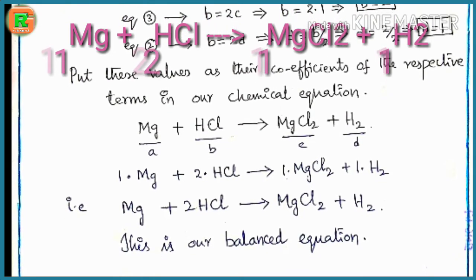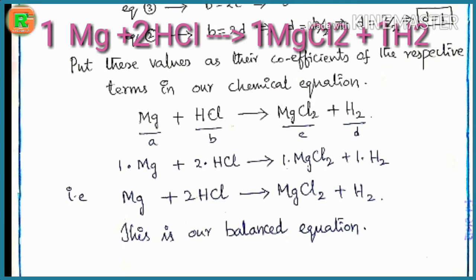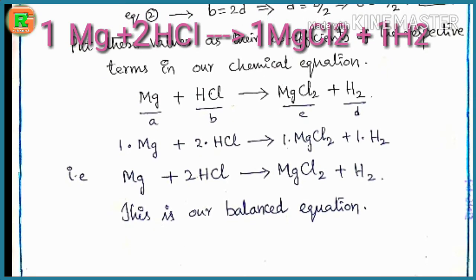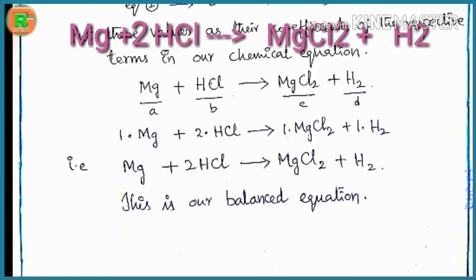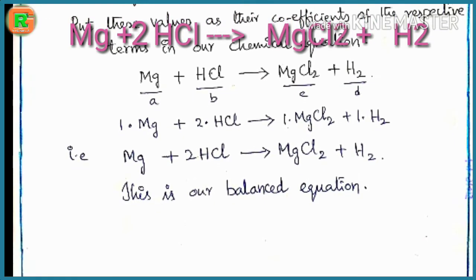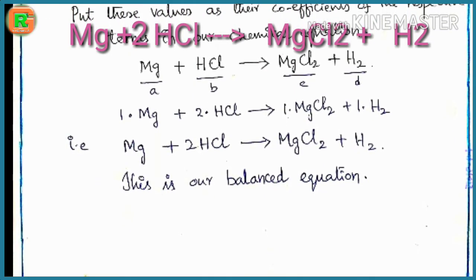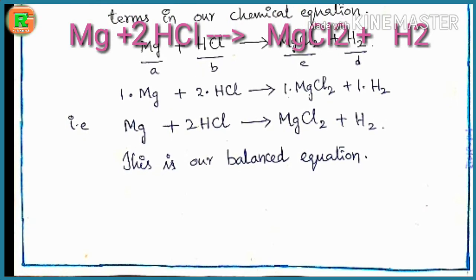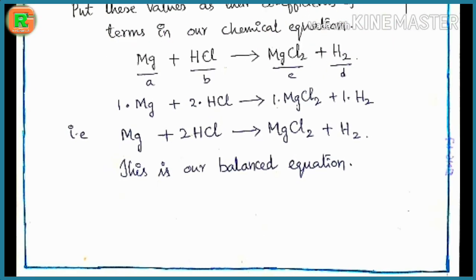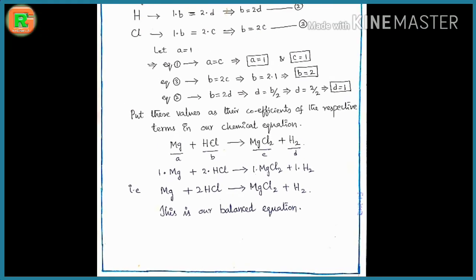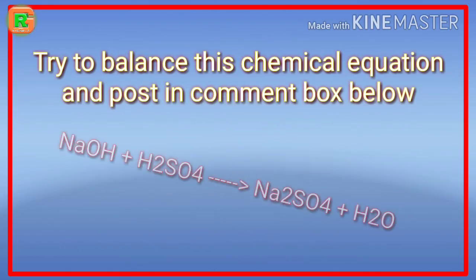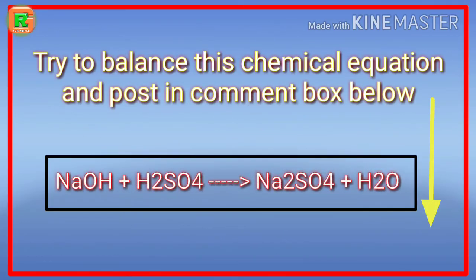Substituting these coefficients into the chemical equation: 1×Mg + 2×HCl → 1×MgCl₂ + 1×H₂, that is, Mg + 2HCl → MgCl₂ + H₂. This is our balanced chemical equation. Hope you understand this method — try to balance the given chemical equation and post your answer in the comment box below.